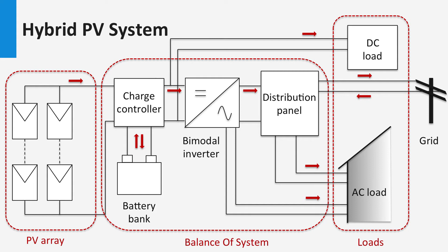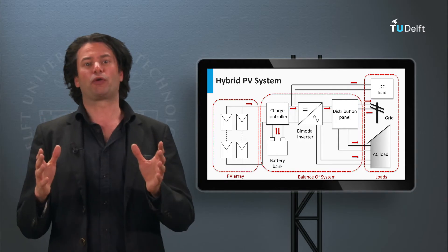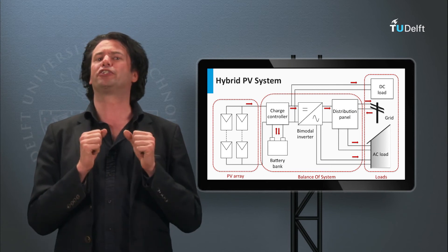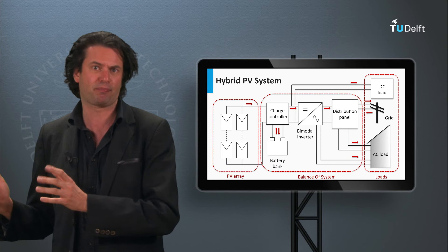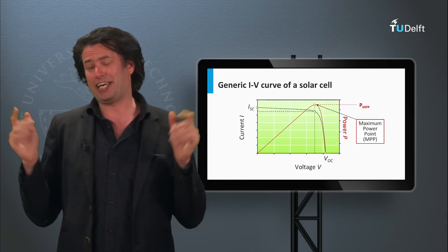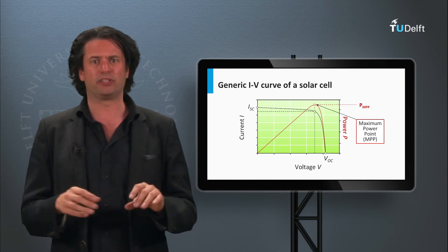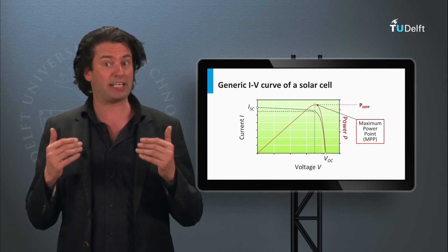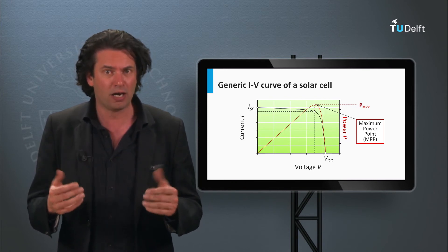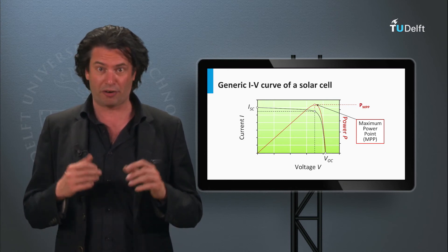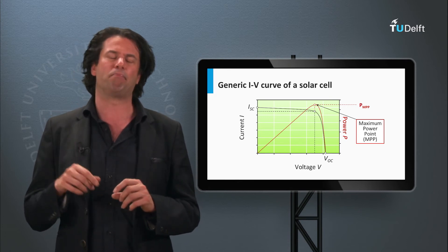These bimodal inverters are usually more expensive and are used less often. Now, we already know the basic application of an inverter in the PV system: power conversion from DC to AC. Can the inverter perform any additional function? The answer is yes. Thanks to advancements in power electronics, it's common to have inverters that implement a maximum power point tracking mechanism before inverting the voltage, thus ensuring that the PV modules or arrays are operating at the maximum power point.